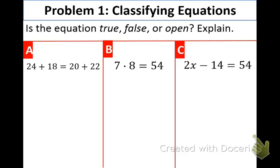Now, let's classify the equations. In part A, we have 24 plus 18 equals 20 plus 22. Well, how can we figure out if it's true or false? How about we just add them? When you add the left, you get 42. And when you add the right, you get 42. What do you think about that? True or false? It is true. You must have the middle line there to prove that it's true. Otherwise, you don't know.